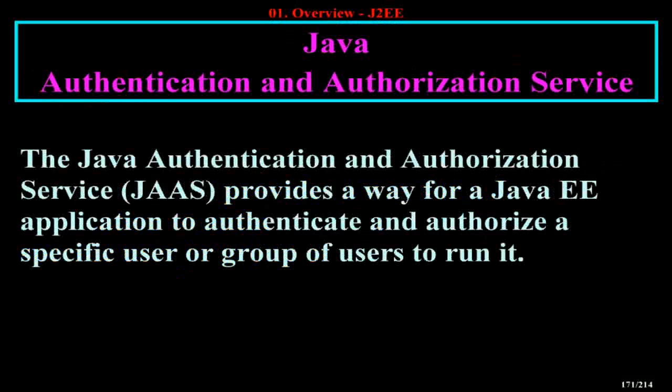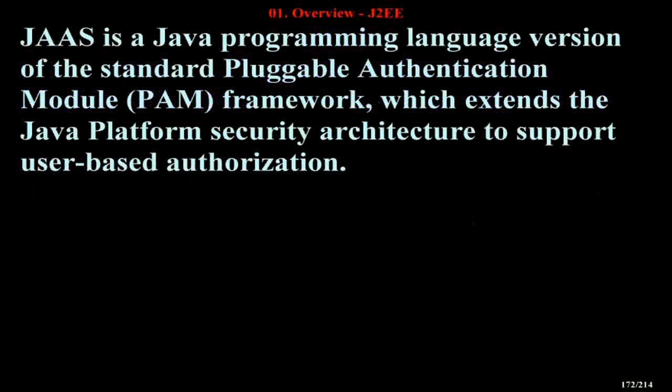The Java Authentication and Authorization Service (JAAS) provides a way for a Java EE application to authenticate and authorize a specific user or group of users to run it. JAAS is a Java programming language version of the standard Pluggable Authentication Module (PAM) framework, which extends the Java platform's security architecture to support user-based authorization.